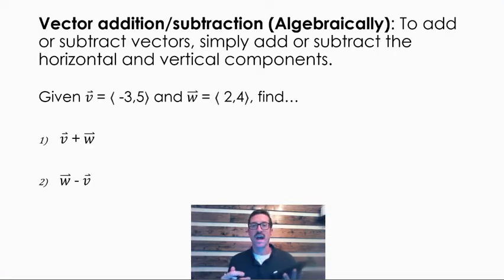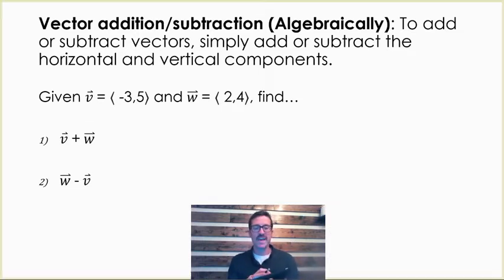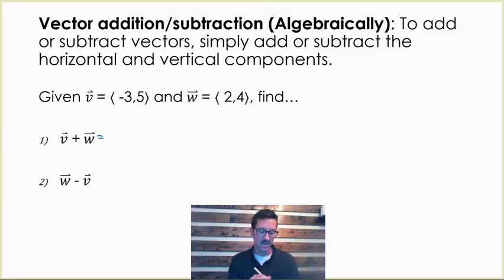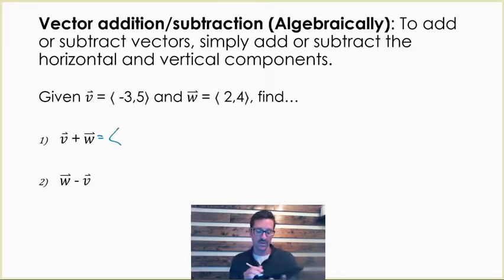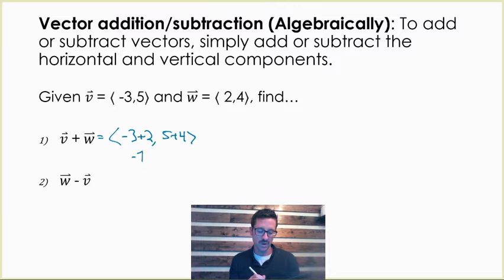Let's look at vector addition and subtraction. We're going to do algebraically on this slide, and then graphically on the next slide. Given vector V and vector W, to find vector V plus W, all I'm going to do to find the horizontal component of my resultant vector is add the horizontal components of the original two vectors. So I'm going to do negative 3 plus 2 for the horizontal component, and 5 plus 4 for the vertical component. Negative 3 plus 2 is negative 1, and the vertical component is 9. So that's the sum of your two vectors.